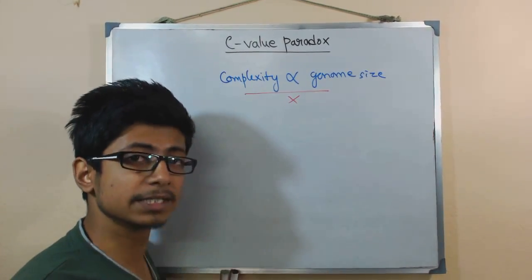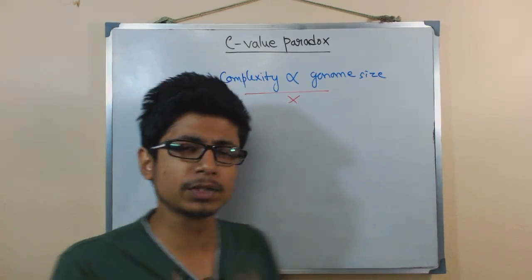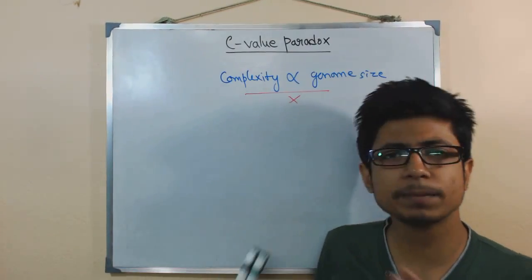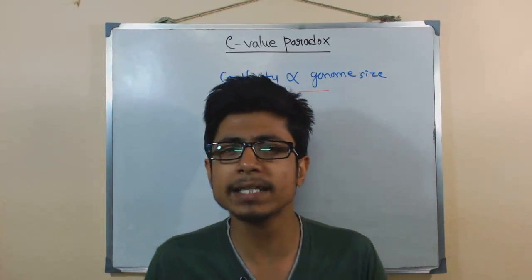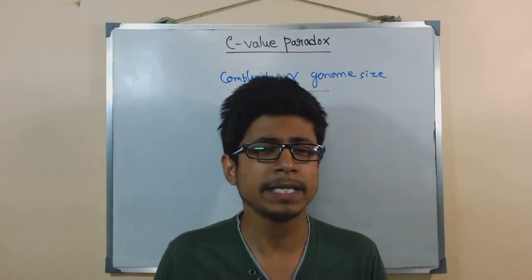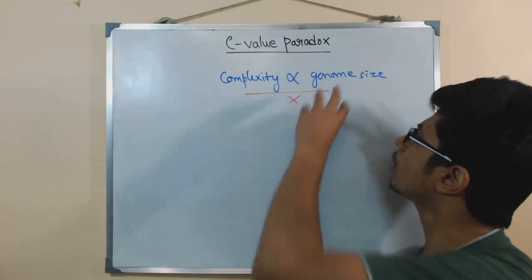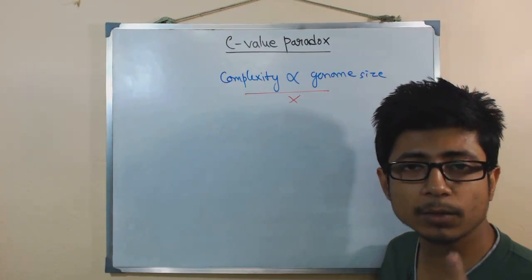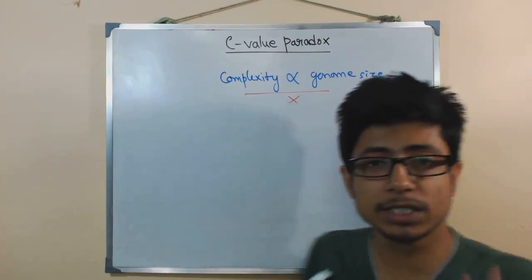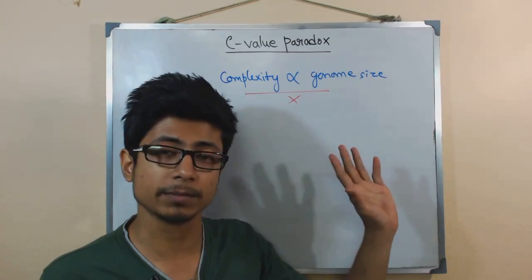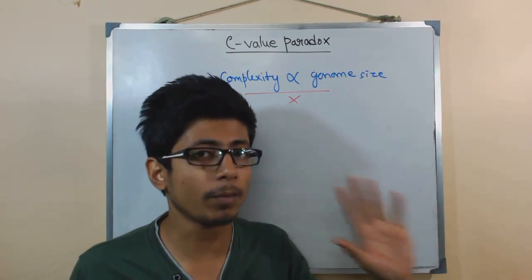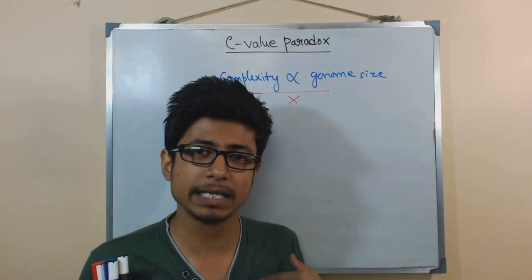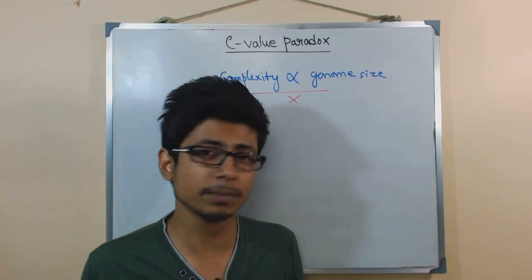That vice versa relationship is called the c-value paradox. The later term, c-value enigma, slightly updated the theory by focusing on the haploid genome content of an individual rather than the whole genome content. But the question still remains and the result is the same — even the haploid genome content is not enough to predict the complexity of an organism, since less complex organisms can still contain a huge amount of haploid genomic content.